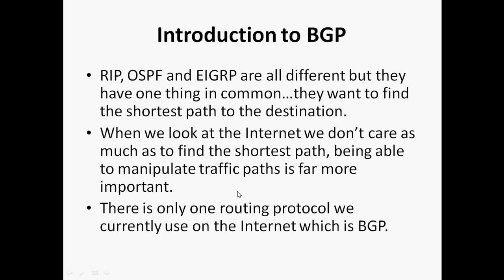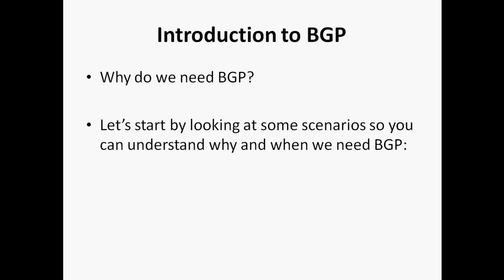Being able to manipulate the traffic paths is far more important. Traffic manipulation and everything — I will explain in upcoming video sessions. RIP, OSPF, and EIGRP are different protocols, but all are used to find the shortest path to reach the destination. There is only one routing protocol we currently use on the internet, and that is BGP.